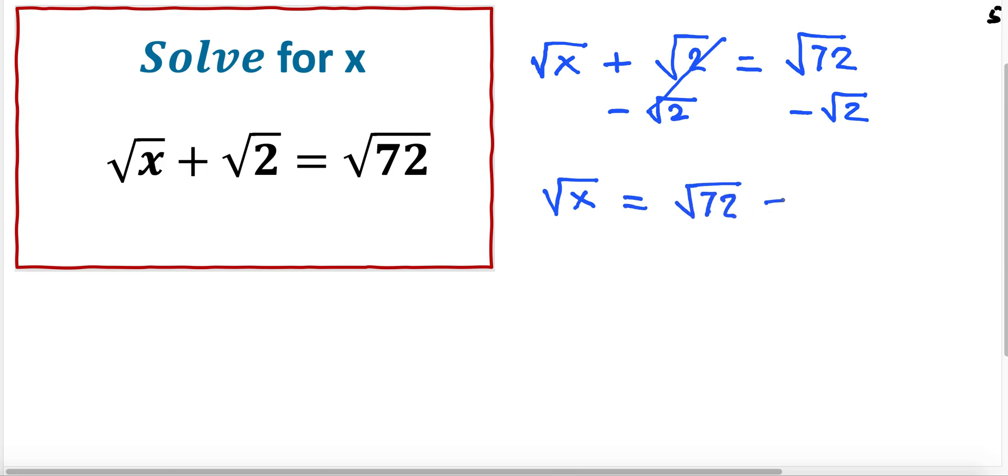Now I'm going to square everything. If I square everything here, the square root of x squared is equal—so I'm squaring this whole binomial, the two terms: square root of 72 minus the square root of 2, and I'm squaring here.